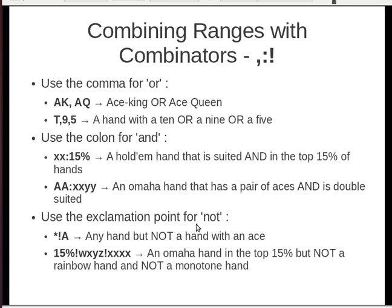The last combinator is the exclamation point for NOT. So star exclamation point A is any hand but not a hand with an ace. And fifteen percent exclamation point WXYZ exclamation point XXXX is an Omaha hand in the top fifteen percent, but not a rainbow hand and not a monotone hand.